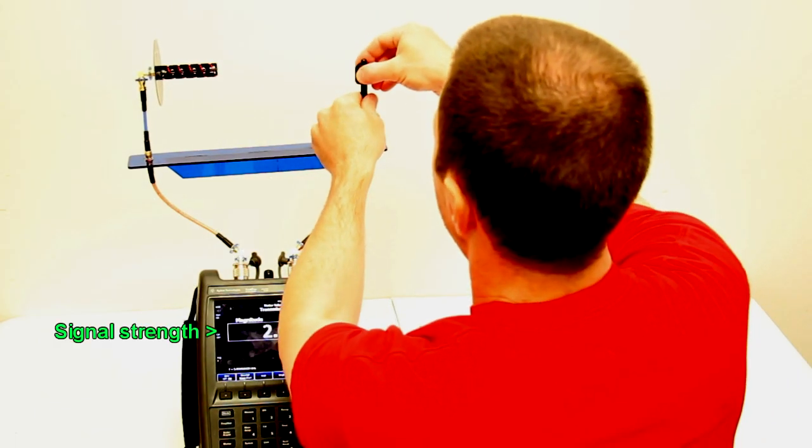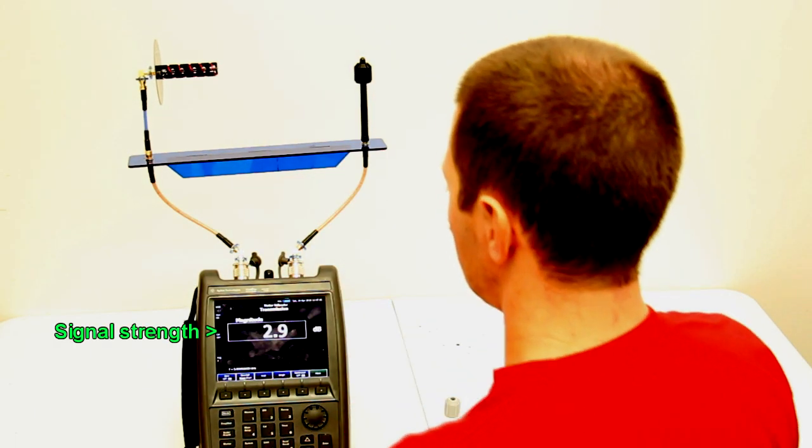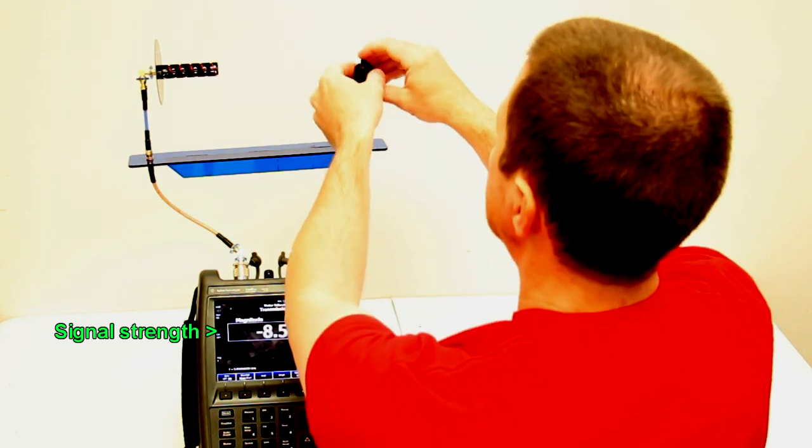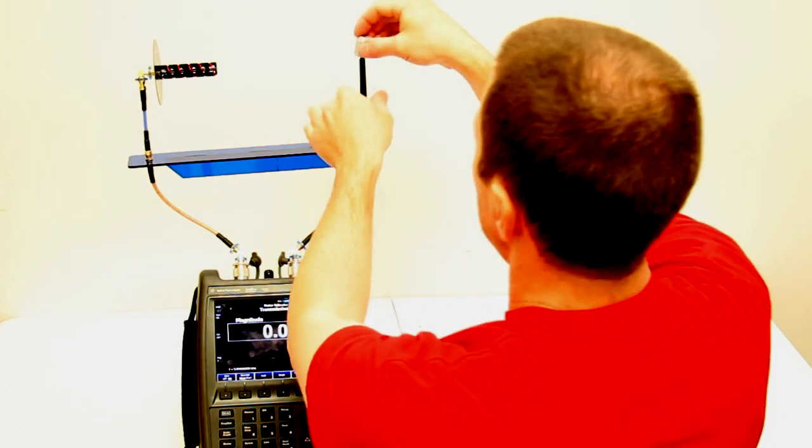As you can see here, the stock whip gains almost 3 dB in signal strength when being received with a right-handed helical when a right-handed cap is placed over it.